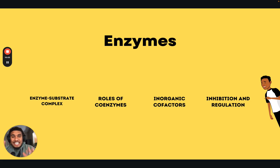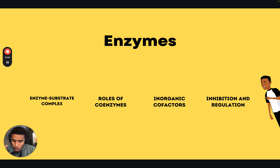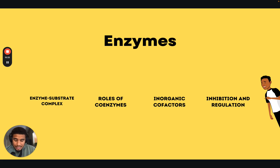Regulation refers to the control of cellular processes, including enzymatic reactions, to maintain homeostasis and respond to changing conditions. For this, you need to understand feedback inhibition, allosteric regulation — spelled A-L-L-O-S-T-E-R-I-C — covalent modification, gene expression and protein synthesis, and feedback loops involving signal transduction pathways and feedback mechanisms. And that's going to do it for enzymes.